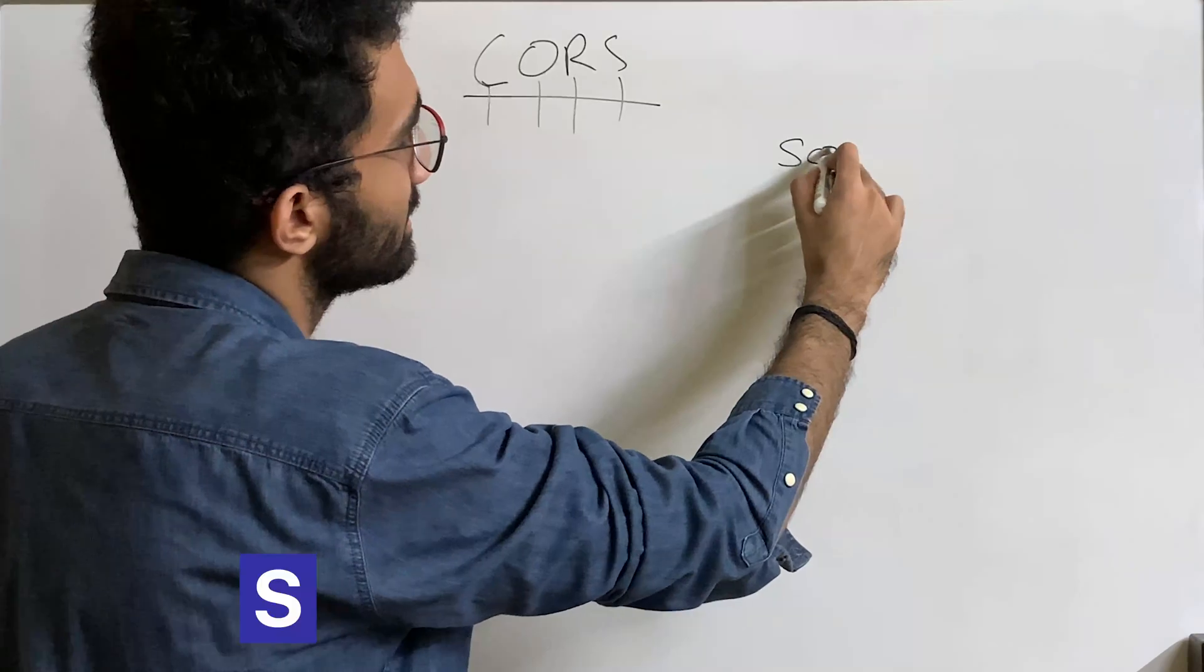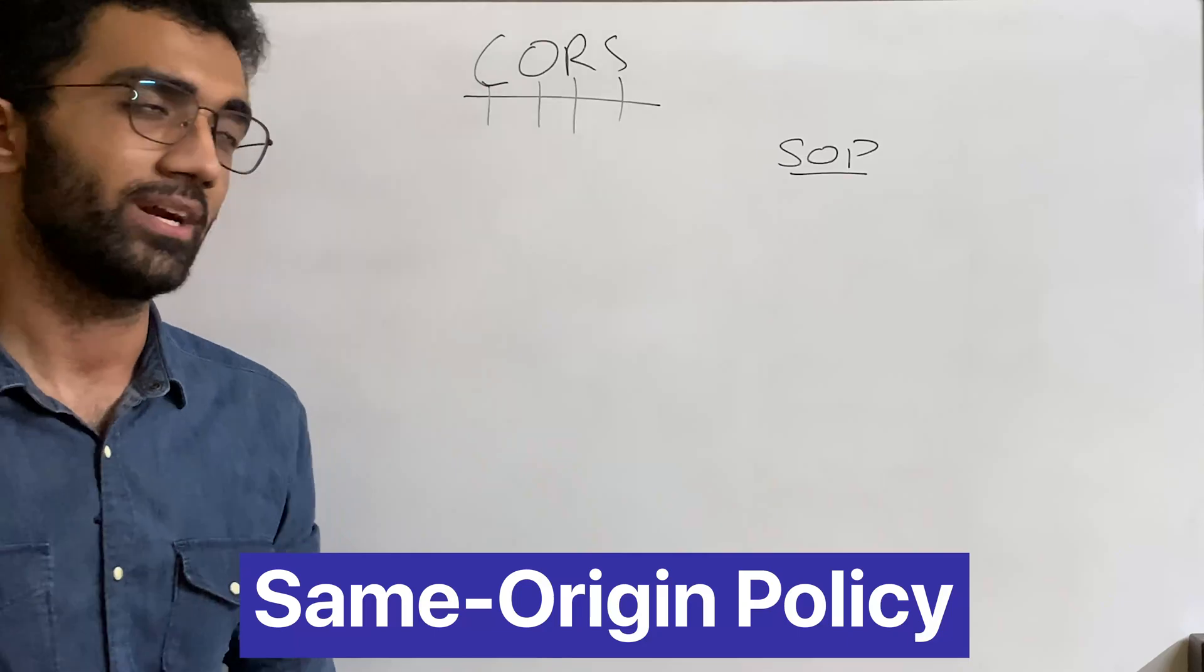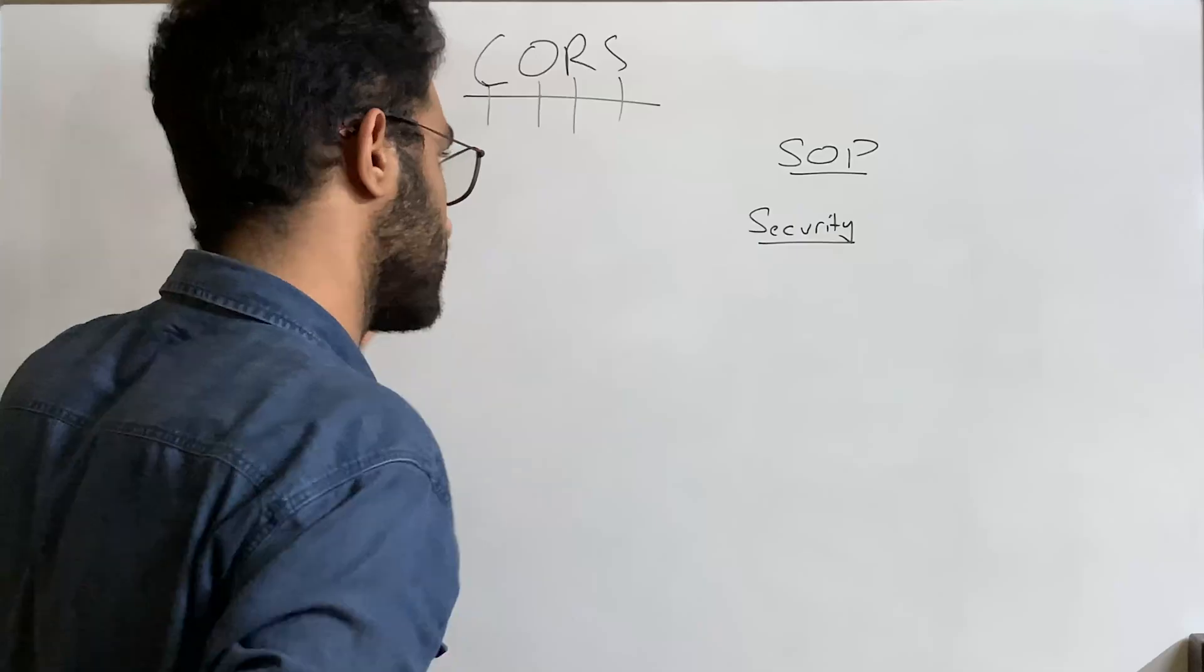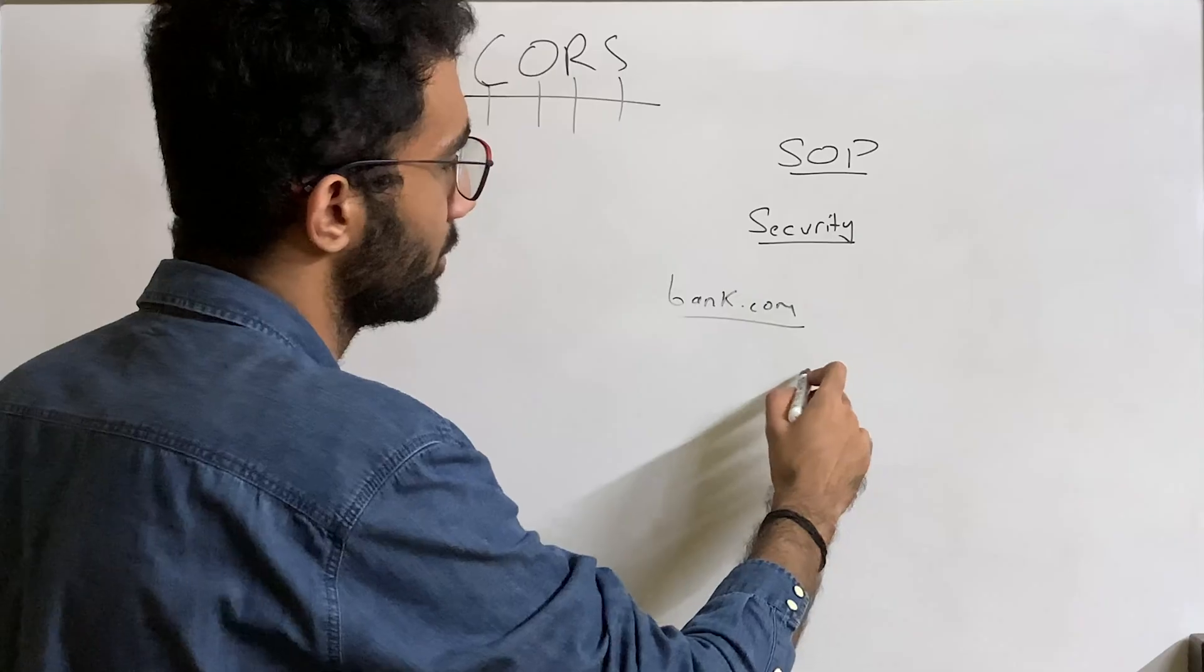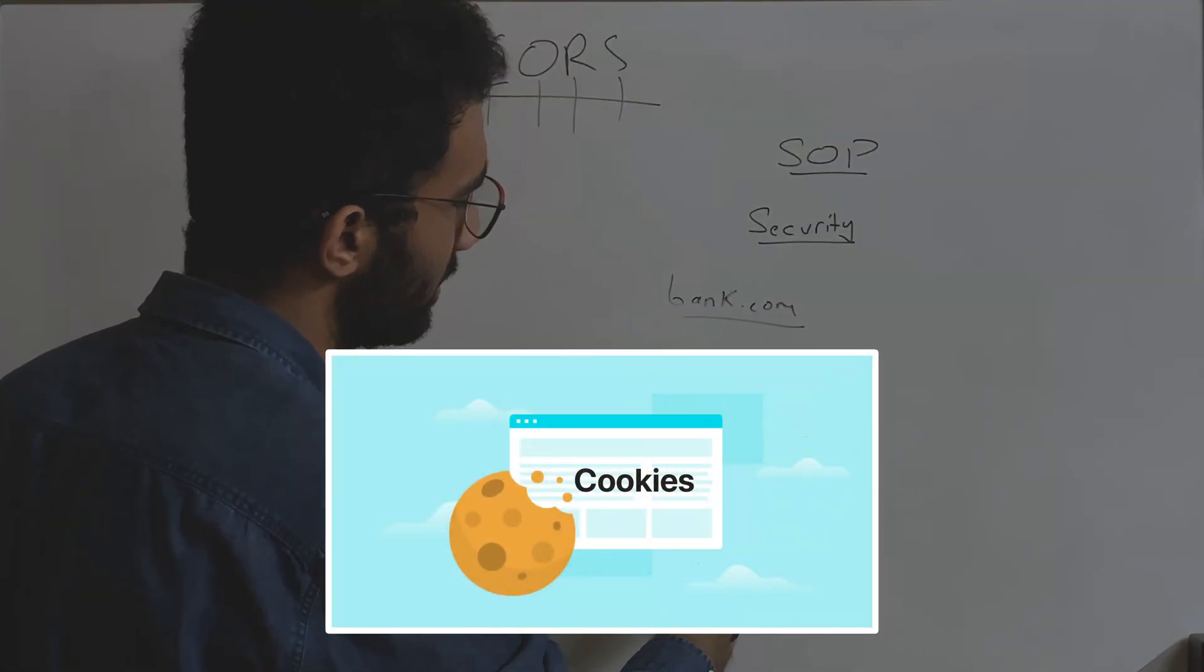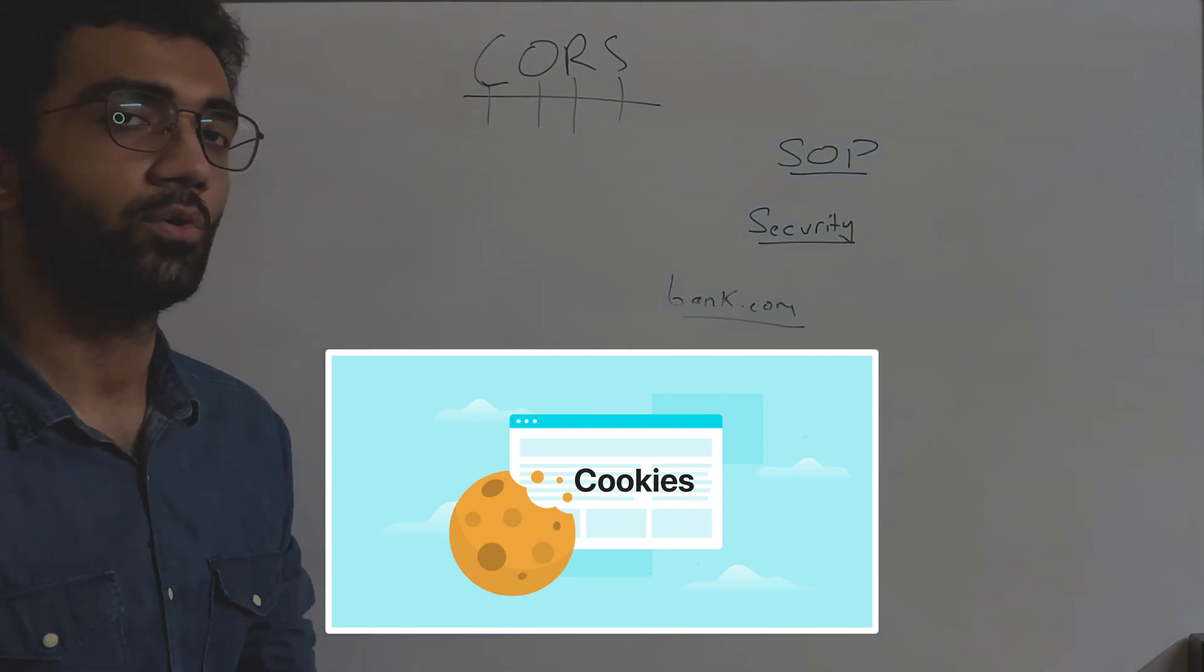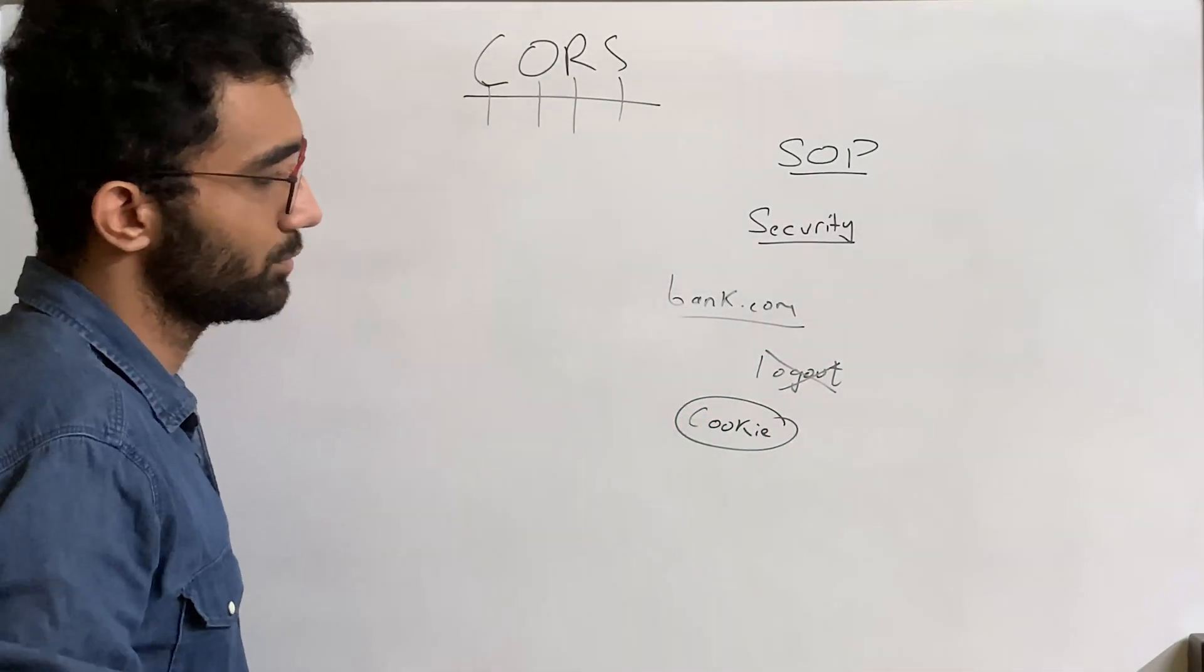This policy right here is super interesting because this is a security measure implemented by browsers. Let's say you visited bank.com and you logged in to your bank, you did the transaction, but you did not log out—you forgot to log out. What your browser would do is that it stores something known as cookies in your browsers, and the next time you visit bank.com you don't have to log in again because your cookies are there.